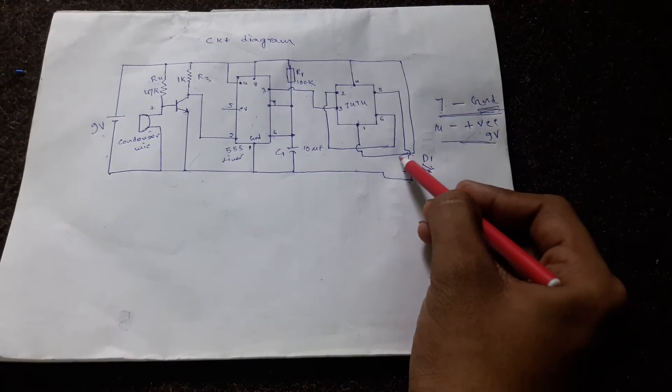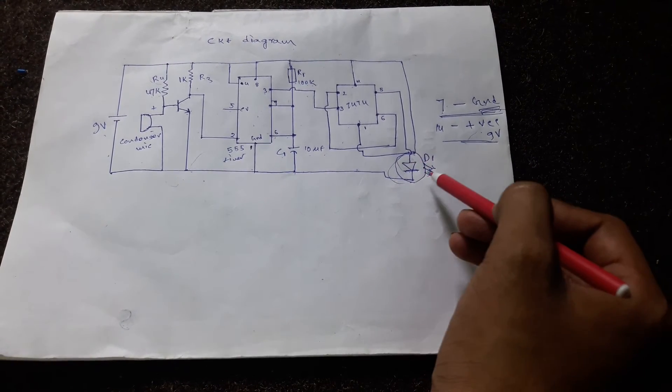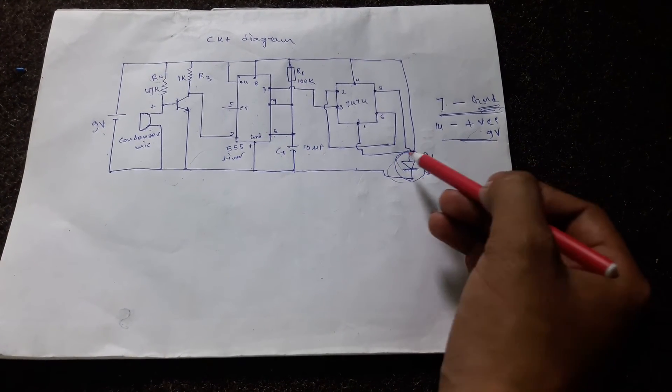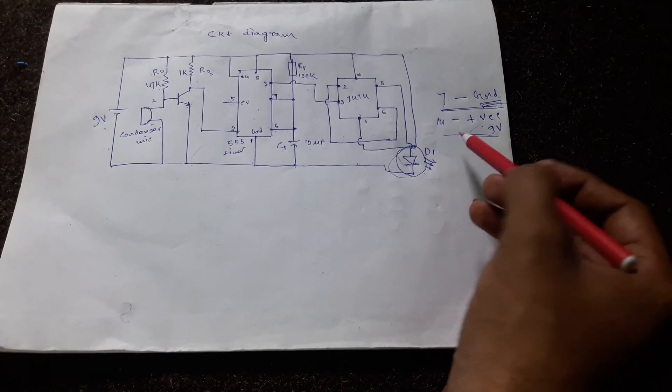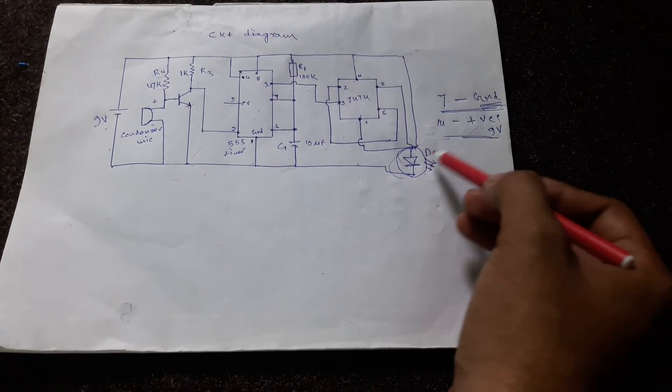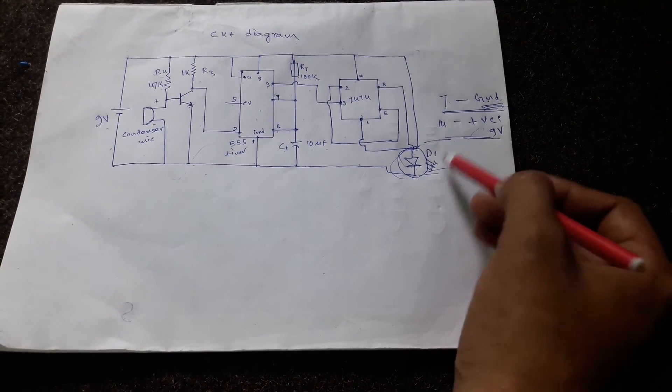If we replace this LED with an electromagnetic switch which will connect when we clap on and disconnect when we clap off, and with that switch connect the household wiring circuit, then we can easily get home automation.